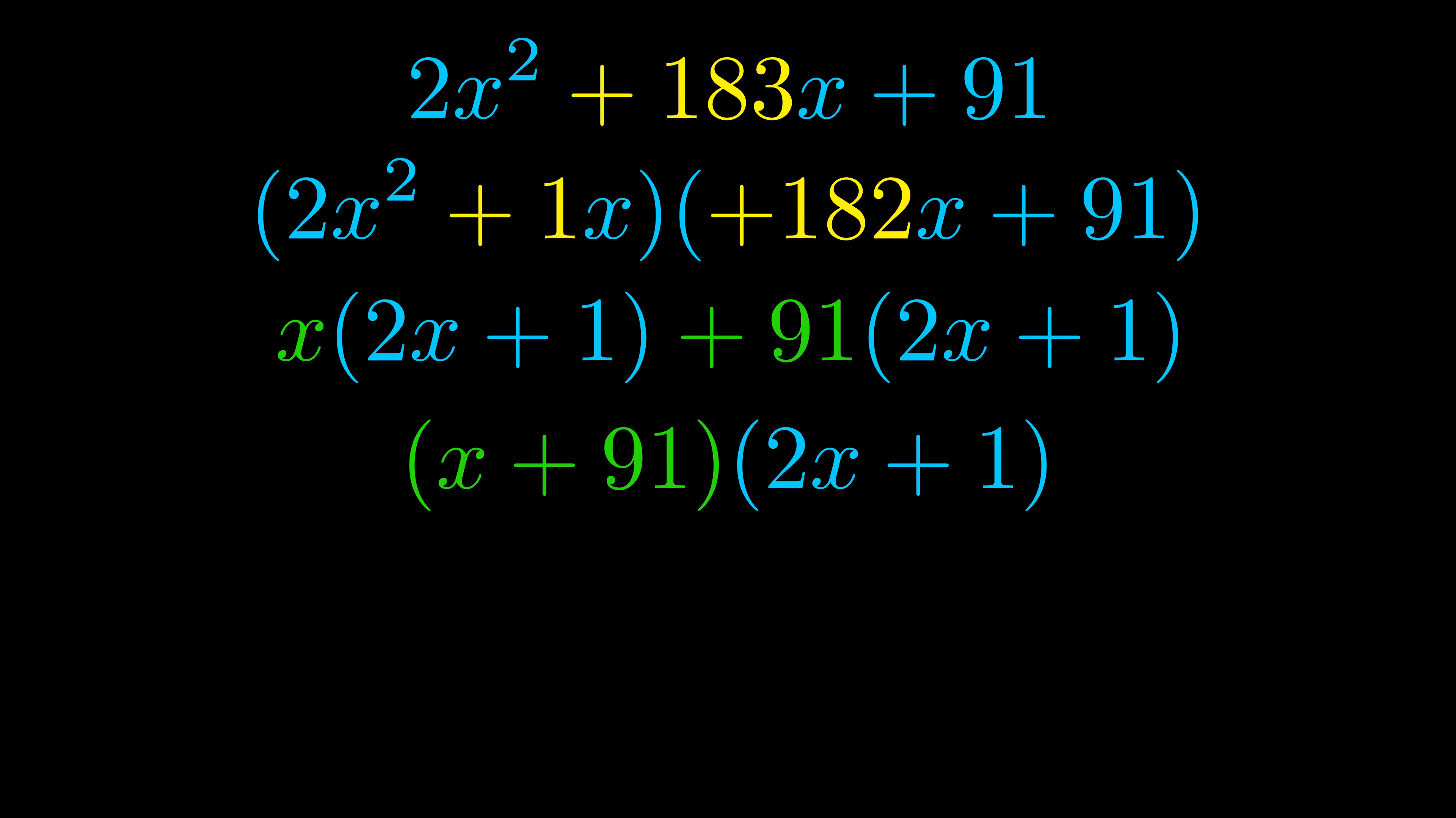Those blue values will become one of our factors and we will combine the two green values, the GCFs that we pulled out, to get the other one. And that is our fully factored equation.